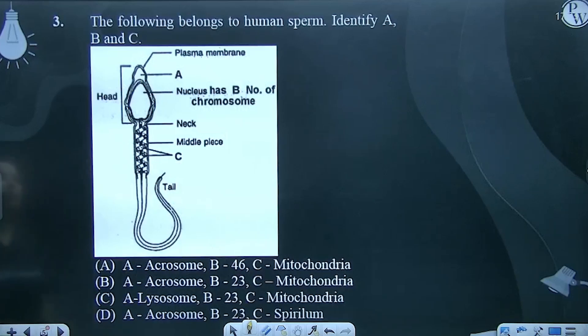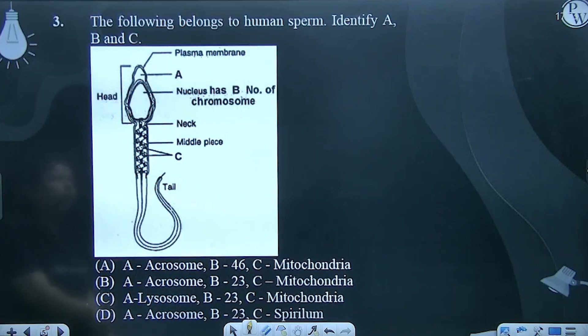Moving to the next question. The following belongs to humans — form identify A, B, C. Hamein A, B aur C identify karna hai.